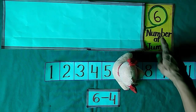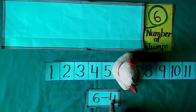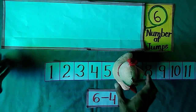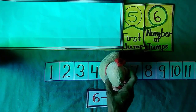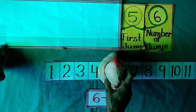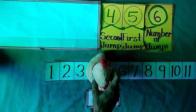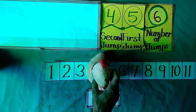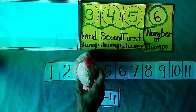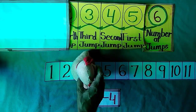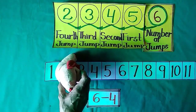Jimmy stands at 6 and he wants to take 4 backward jumps. Let us see where he reaches after 4 backward jumps. When he takes his first backward jump, he reached at 5. With second backward jump, he reached at 4. When he takes his third backward jump, he reached at 3. And when he takes his fourth backward jump, he reached at 2.